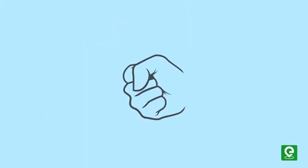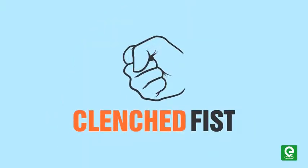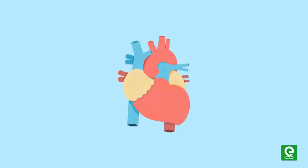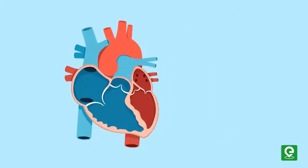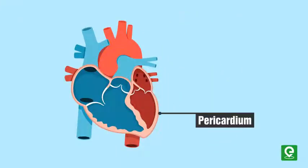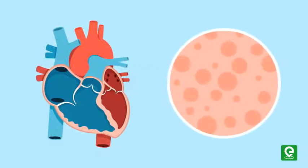It has the size of a clenched fist and is protected by a double-walled membranous bag called the pericardium, which encloses the pericardial fluid.